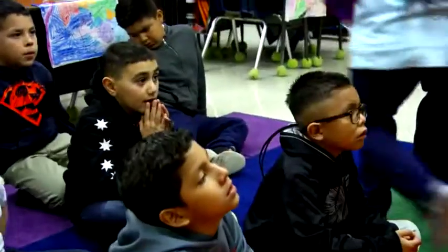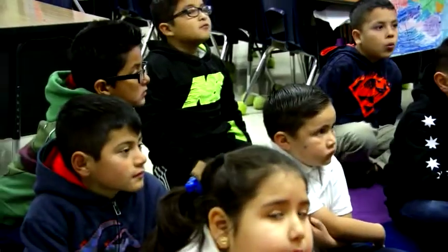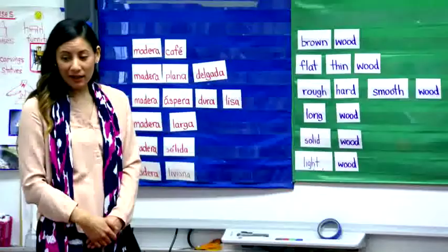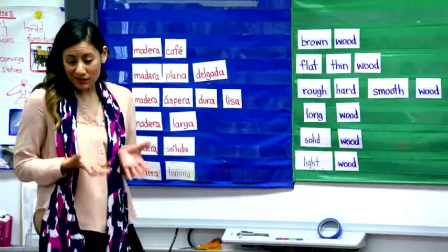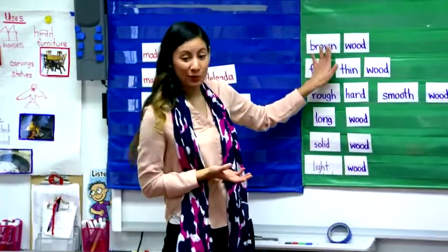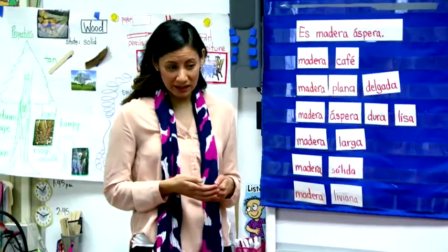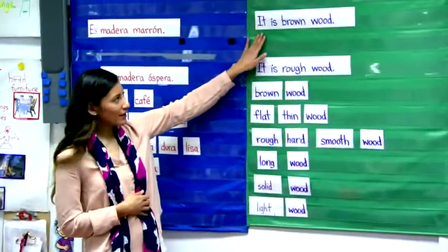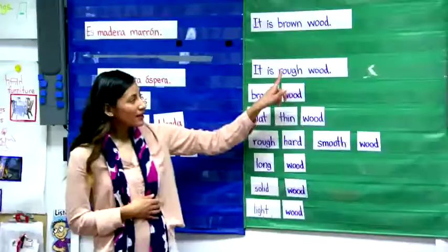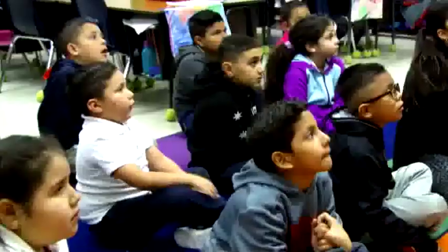Can we read this, everyone? Light wood. Do you have a question or comment, Diego? If it says 'wood brown,' it's not going to make sense, but it's going to make sense if you say 'the wood is brown.' Exactly — it just doesn't make sense in English to say 'wood brown.' In English we say 'brown wood.' So now share a sentence in English. It is brown wood. It is rough wood. Does the adjective go before or after the noun? Before.